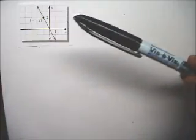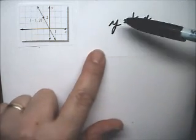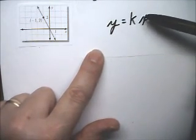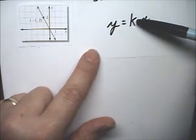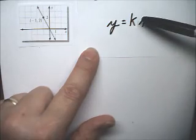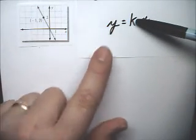Direct variation, of course, is like this: y equals kx. All we have to do is figure out k, and k is the slope, called the constant of variation.